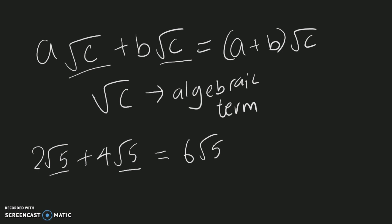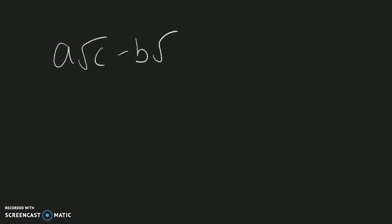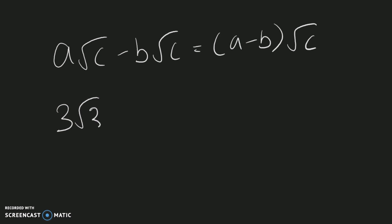The same applies to subtraction: 'a' root 'c' minus 'b' root 'c' equals (a minus b) root c. For example, three root three minus two root three equals one root three.